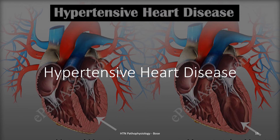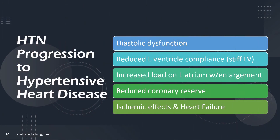Let's now delve into hypertensive heart disease. A study of hypertension is not complete without a discussion of hypertensive heart disease. Regardless of etiology or pathophysiologic mechanisms, hypertension produces a pressure overload on the left ventricle. The left ventricle hypertrophies as a result of sustained hypertension because it must work harder to push blood into the systemic circulation, which has a raised resistance.